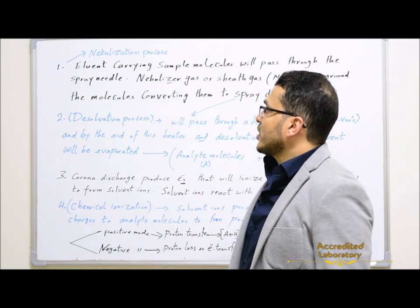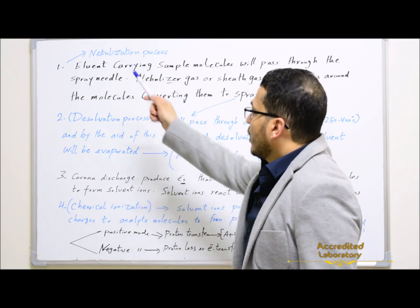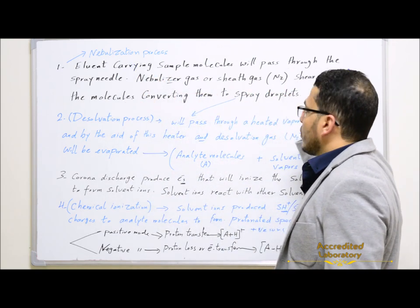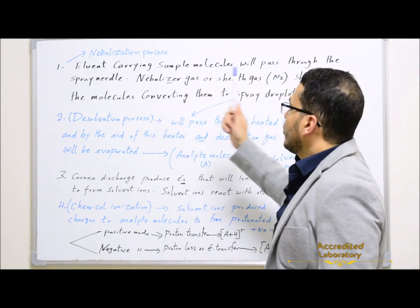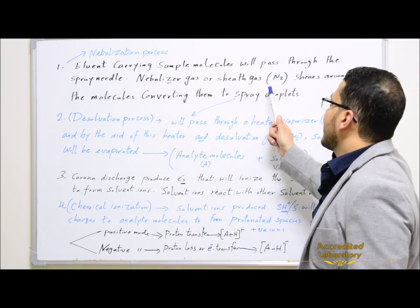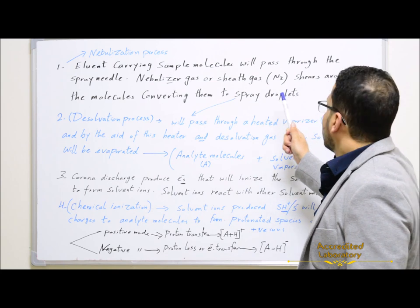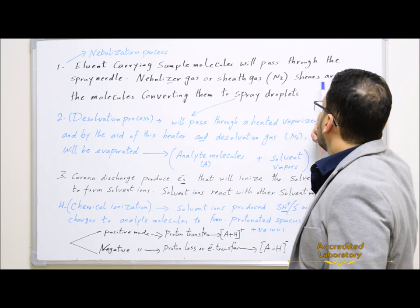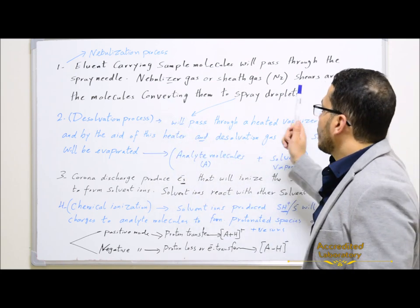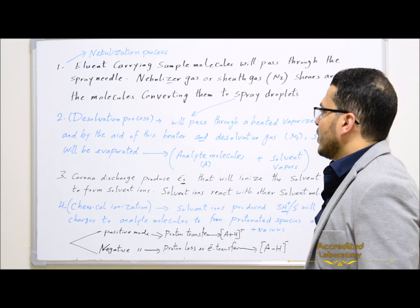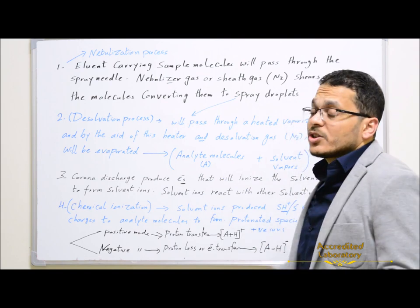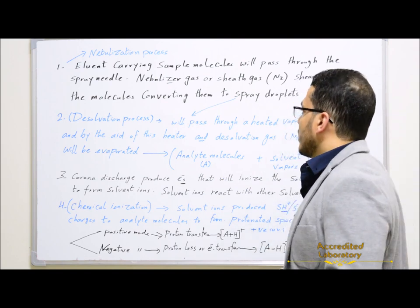Nebulization process: the eluent carrying sample molecules will pass through the spray needle. Nebulizer gas, or sheath gas, which is nitrogen gas, shears around the molecules, converting them to spray droplets which consist of sample molecules surrounded by solvent molecules.